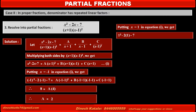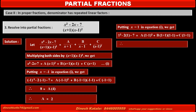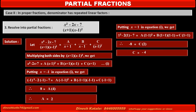Replacing x by 1: the left-hand side becomes 1² - 2(1) - 7. The first term becomes A(1-1)², the second term becomes B(1+1)(1-1), and the third term becomes C(1+1). Solving, we get -8 = C × 2, therefore C = -4.